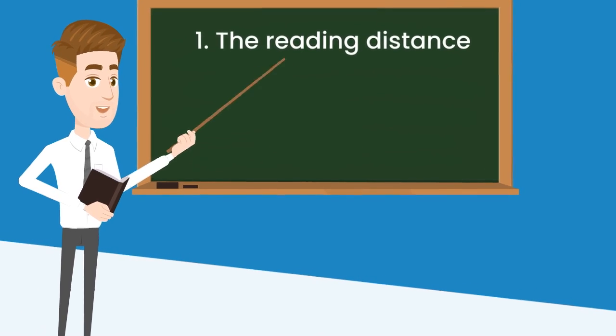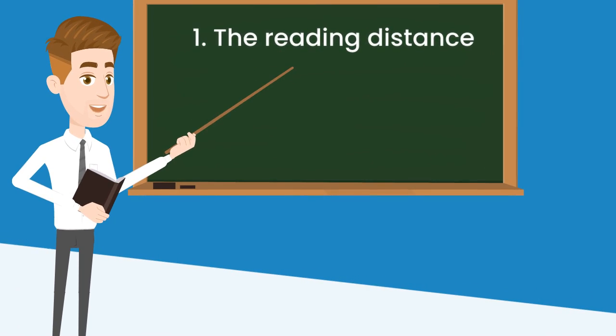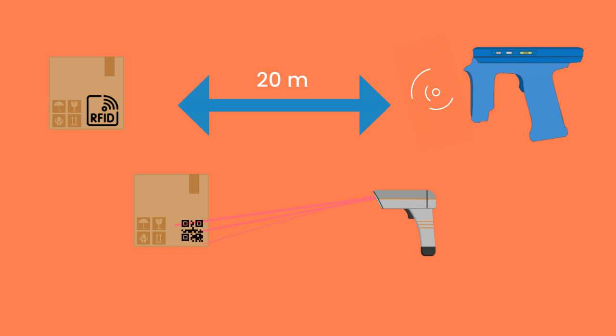The first thing is the reading distance. With passive RFID, an object can be identified from a few centimeters to 20 meters away. A QR code can be scanned at a maximum distance of 1 to 2 meters.